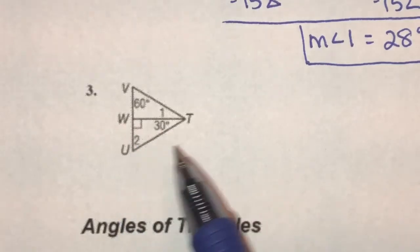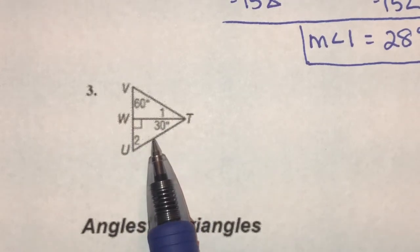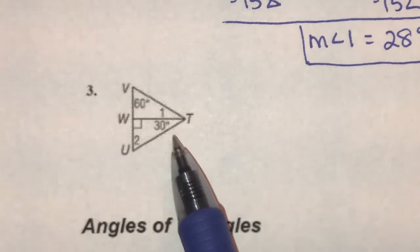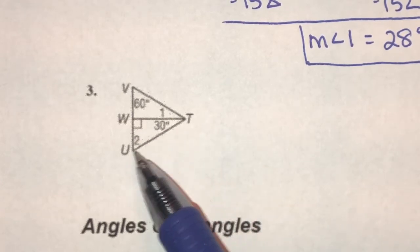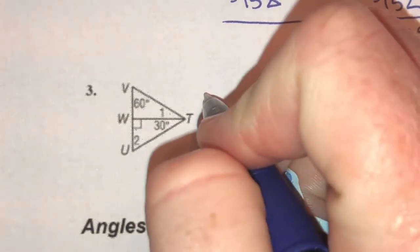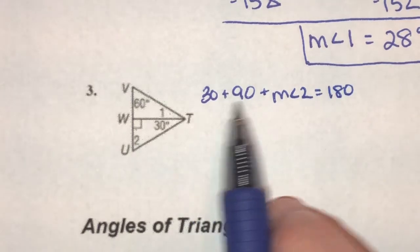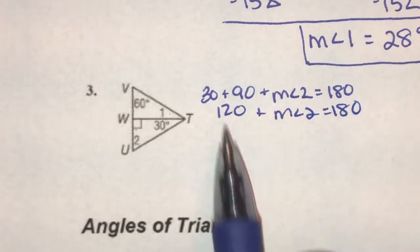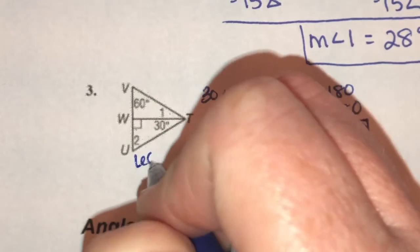Number three. Here we have a 60 degree angle, angle one, a 90 degree angle, angle two, and a 30 degree angle. We want to find the measures of angles one and two. I can start with angle two, because if this is 90 degrees and this is 30, then 30 plus 90 plus the measure of angle two adds up to 180. 30 and 90 is 120. Subtract 120 from both sides — the measure of angle two has to be 60 degrees.